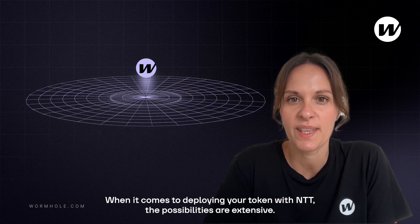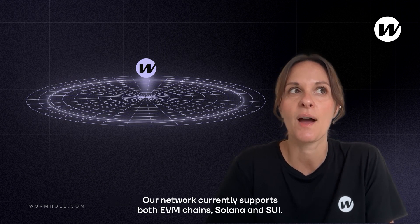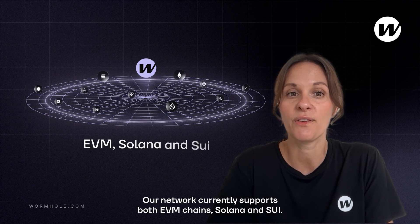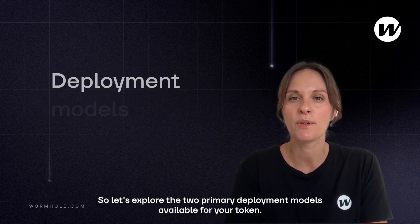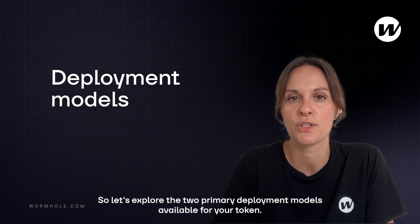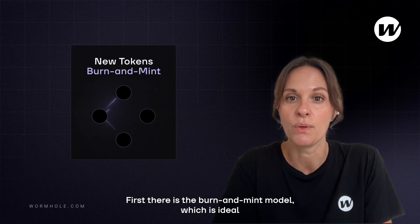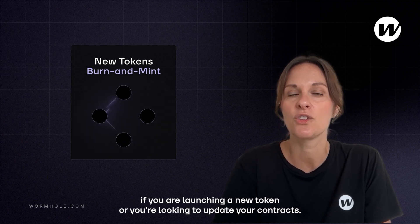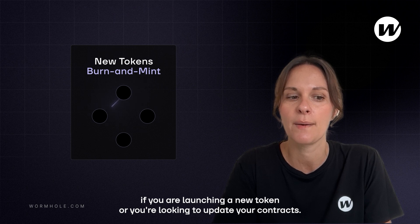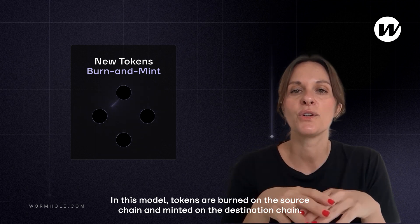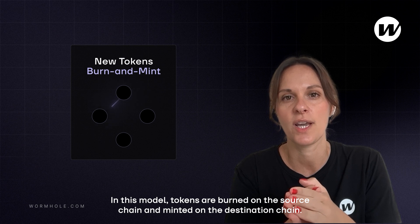When it comes to deploying your token with NTT, the possibilities are extensive. Our network currently supports both EVM chains, Solana, and Sui. Let's explore the two primary deployment models available for your token. First, there is the burn and mint model, which is ideal if you are launching a new token or looking to update your contracts. In this model, tokens are burned on the source chain and minted on the destination chain.